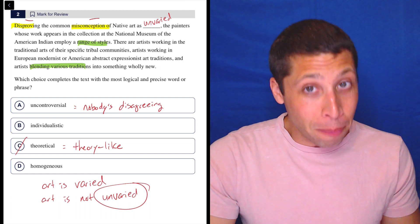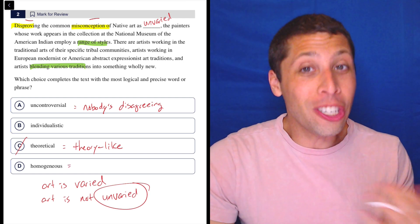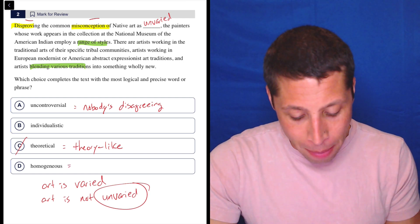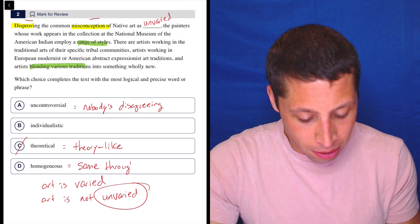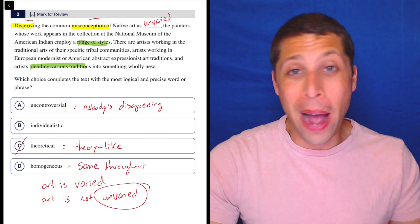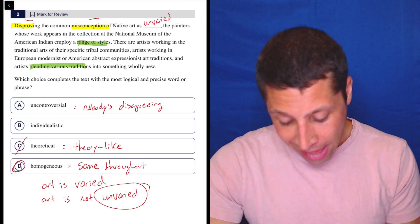Now, homogenous or homogeneous, depending on how you want to pronounce it, basically means something is the same throughout. Okay? The same throughout, unvaried. That's my answer.